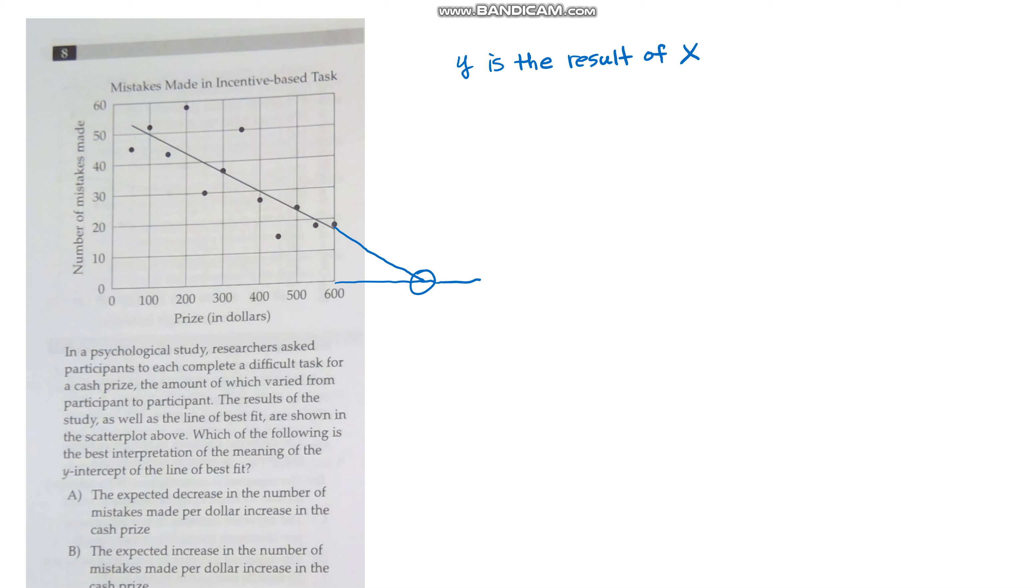On rare occasion kids get it right, but for the most part I have to explain it. I'll say okay, so here the y value is zero and y is the number of mistakes, but remember y is the result of x. So the x-intercept would be the amount of prize money I'd have to award up front before people took it really seriously and no longer made any mistakes. That'd be the best way to interpret the x-intercept here.